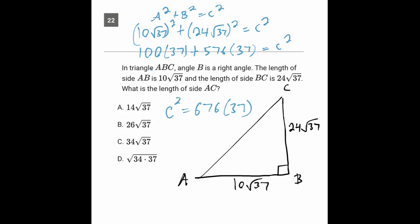Similar to if we had 100x plus 576x, that would be 676x. The reason I'm doing it this way is so we can take the square root of both sides.